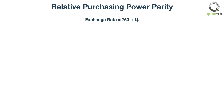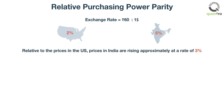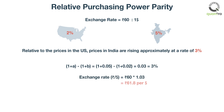Suppose the exchange rate between India and the USA is 60 Indian Rupees per USD. The expected annual inflation rate for the USA is 2%, and for India it is 5%. This means that relative to prices in the US, prices in India are rising at approximately 3%, calculated using the formula (1 + A) minus (1 + B), where A is the expected annualized inflation rate of India and B is the expected annualized inflation rate of the USA. So the new exchange rate would be 61 Indian Rupees and 80 paise per dollar.